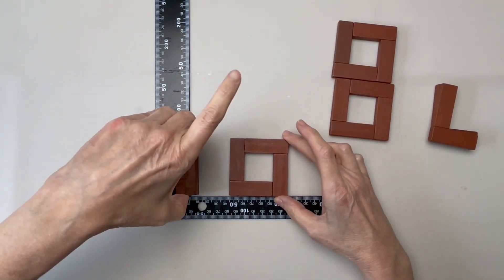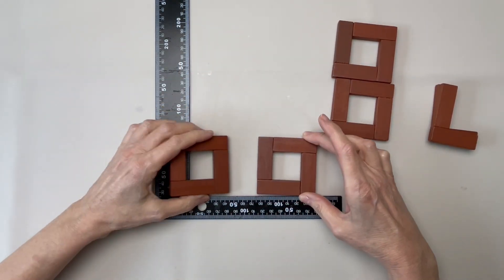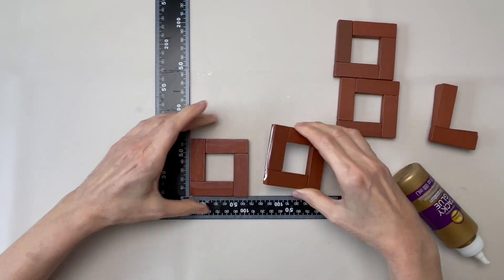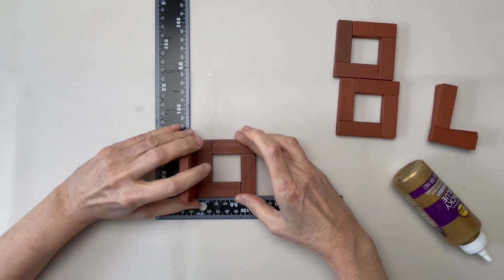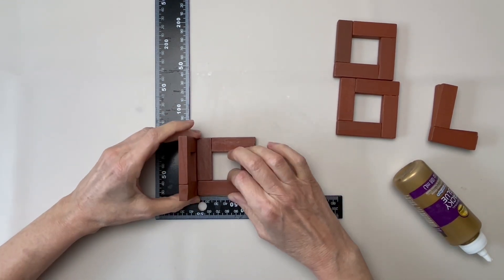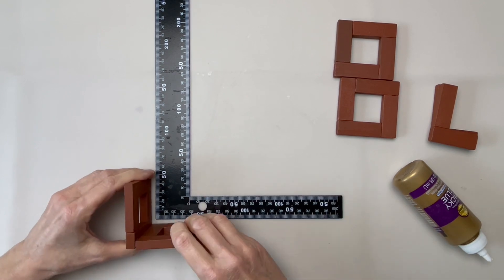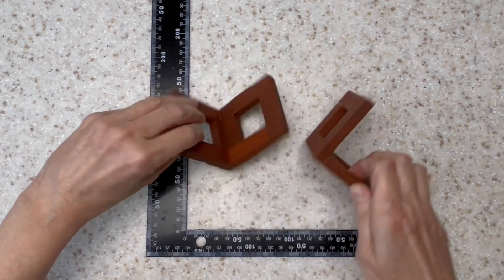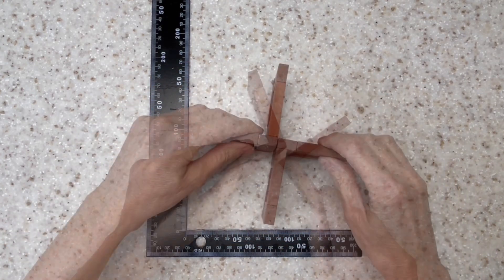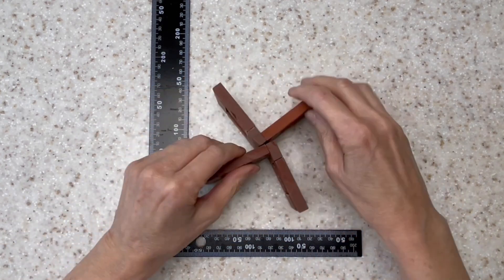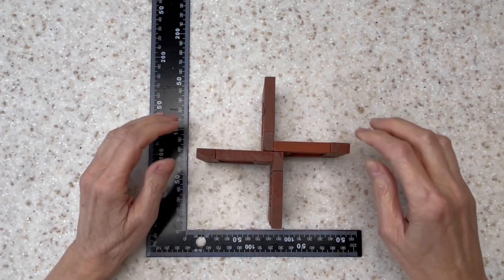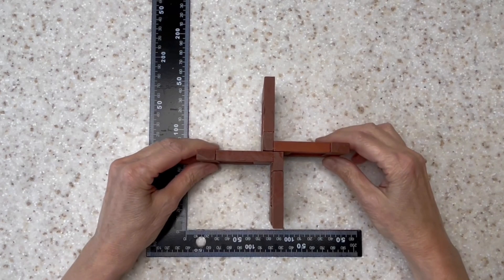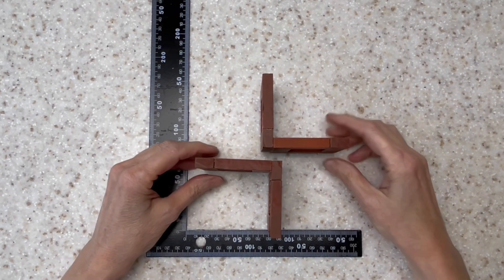Take two of the squares. Make sure that the blocks are going in the same direction. Glue them together at a right angle as seen on screen. Double check their position using the outside corner of the square. The more accurate these are, the better your project will turn out. Make two sets. Glue the two sets together in the position seen here. If you have them in the right position, there will be a perfect cross right in the middle and it will measure five inches by five inches.